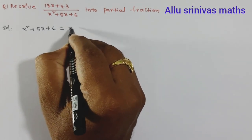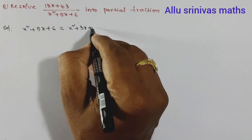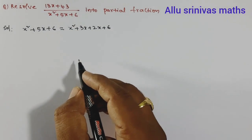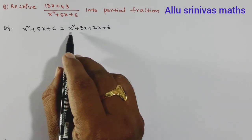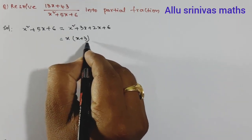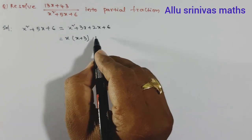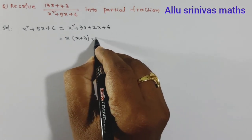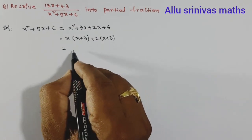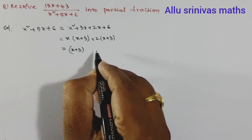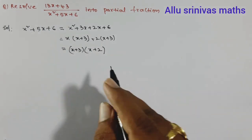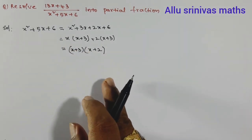5x can be written as multiples of 6 adding to 5 — so 3x plus 2x — giving x squared plus 3x plus 2x plus 6. We take x common from the first two terms: x(x+3), then take 2 common from the remaining two terms: 2(x+3). So x plus 3 is common, giving factors (x+3)(x+2).